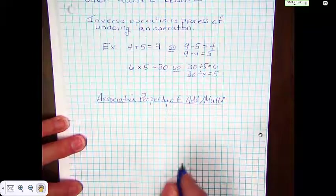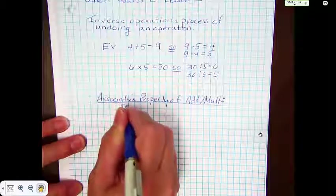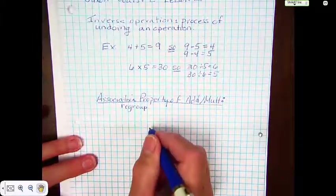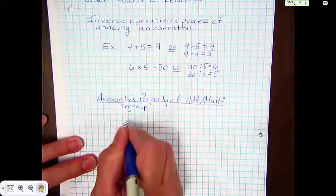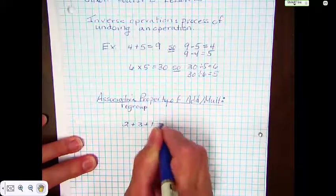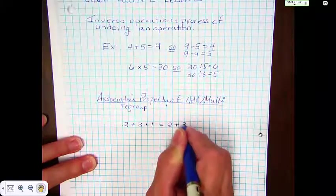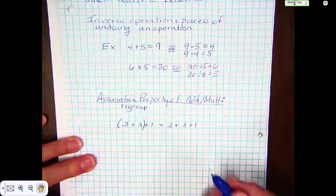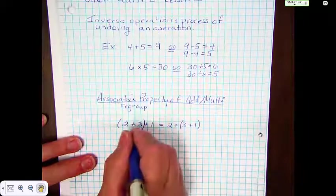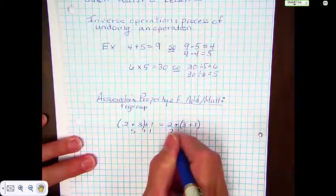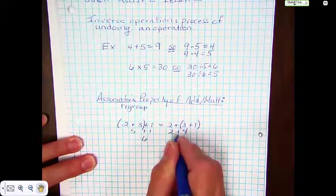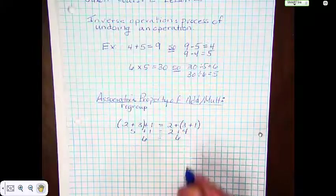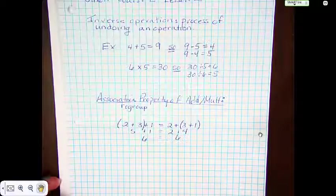So for example — I'm going to write the word 'regroup' just to remind you what it means. If you had the equation 2 plus 3 plus 1 equals 2 plus 3 plus 1, they're equal, they're the same thing. But the first one I grouped this way, and the second one I can group this way, and of course we end up with 5 plus 1 and 2 plus 4, and we get 6 on both sides. We would use this if we had numbers that went together well, like 7 and 3, and 6 and 4, and we wanted to add those up first.